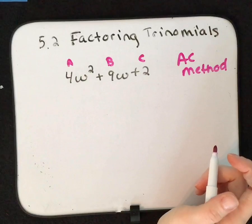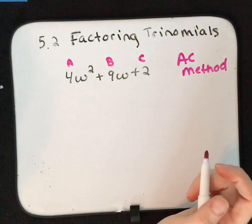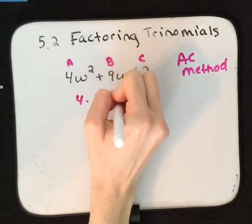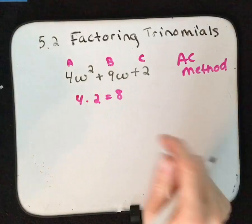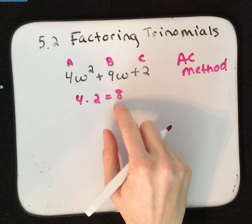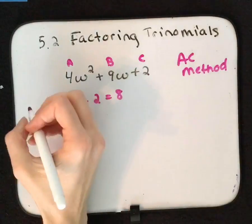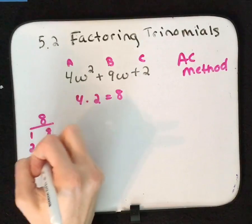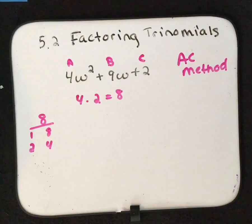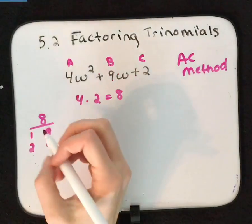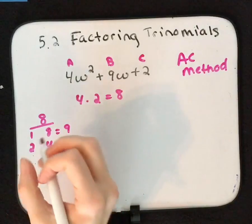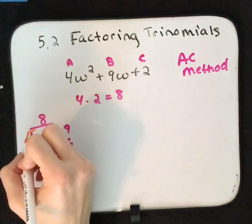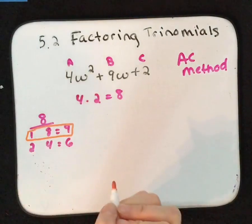With the AC method, we multiply a times c. In this case, if we multiply 4 times 2 we get 8. Then we need to think about the factors of 8 where we can add them together and get 9. The factors of 8 are 1 times 8 and 2 times 4. If I add 1 plus 8 I get 9. If I add 2 plus 4 I get 6. I need 9, so 1 and 8 are the factors we want to use.